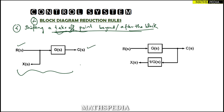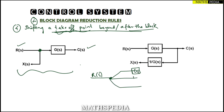Now why are we going to use a takeoff point? First, why not use a summing point? You can observe this takeoff point — suppose we consider a system where R(s) is the input and I want this input to be passed on to three different blocks. Same input passed through three different blocks — suppose one block G1, a second block G2, and a third block G3.